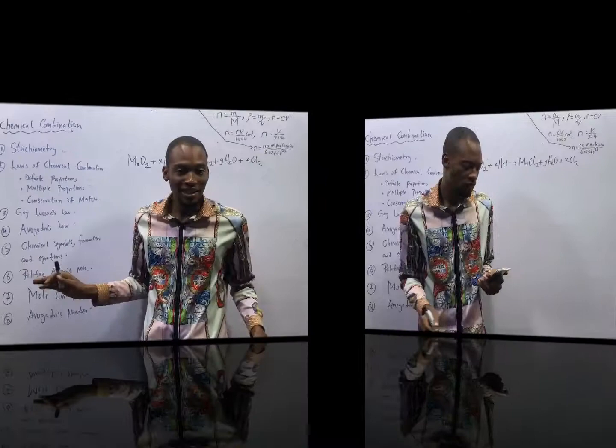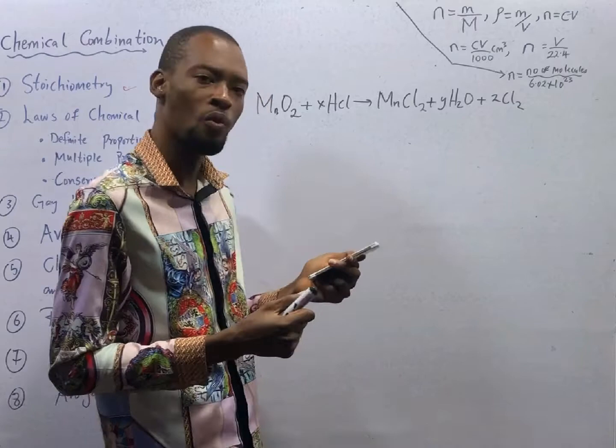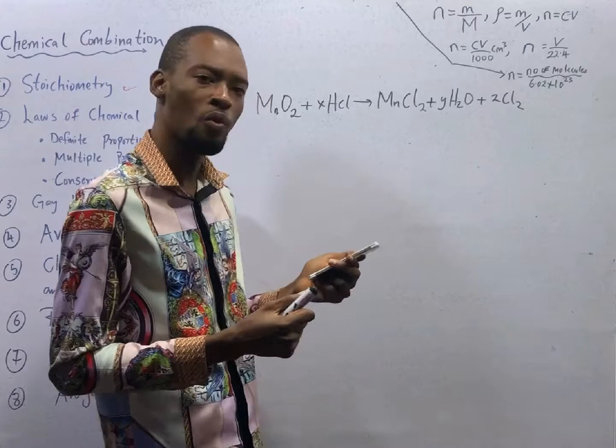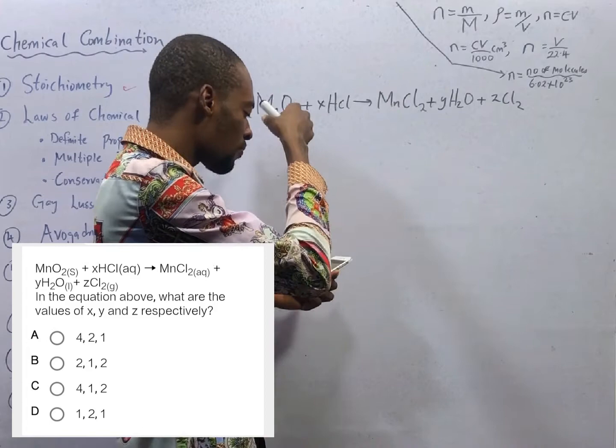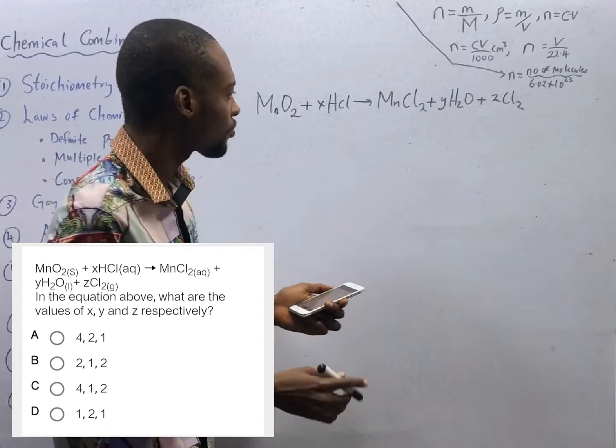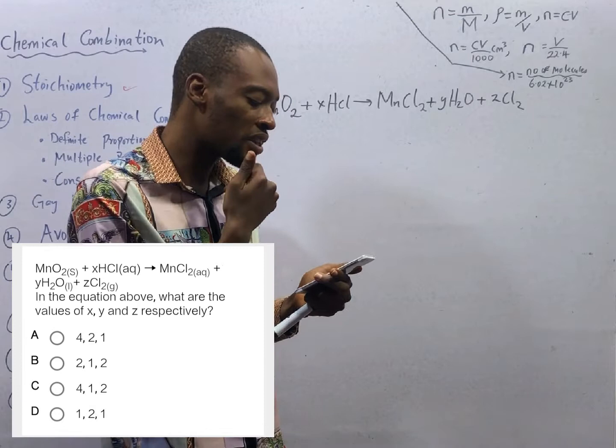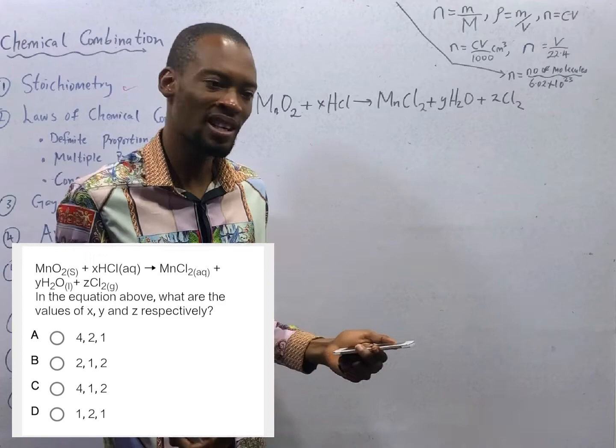The first question: in the equations above, what are the values of S, Y, and Z? This is solid. This is hydrochloric acid, aqueous. If it were gaseous, it would have been hydrogen chloride. This is manganese chloride, water in liquid state, and chlorine gas. To balance this equation and find the values of S, Y, and Z simply means balance the equation. The best way to answer questions like this is follow the options and see which one gives you a balanced equation.